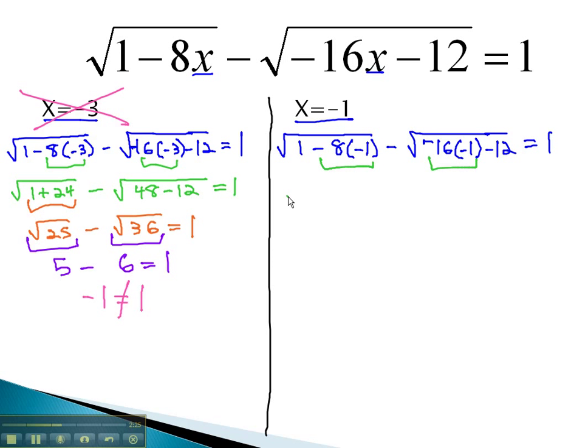Multiplying to start the problem off, we get the square root of 1, plus 8, minus the square root of 16, minus 12, hopefully will equal 1. 1 plus 8 is 9, and 16 minus 12 is 4. Hopefully, this will equal 1.